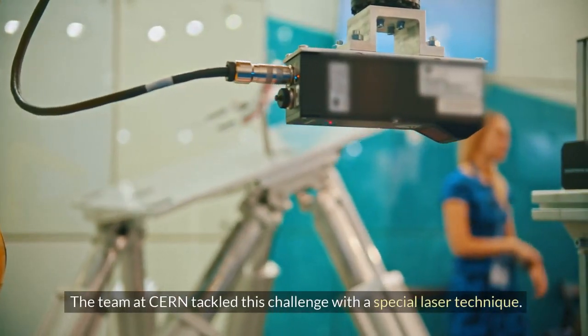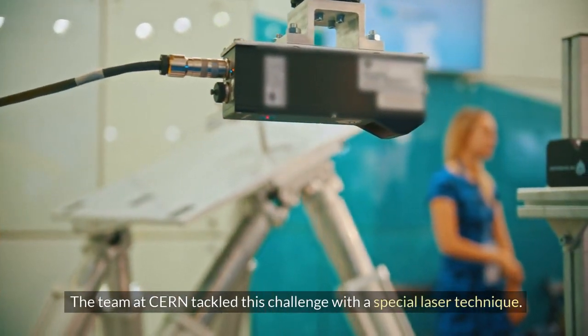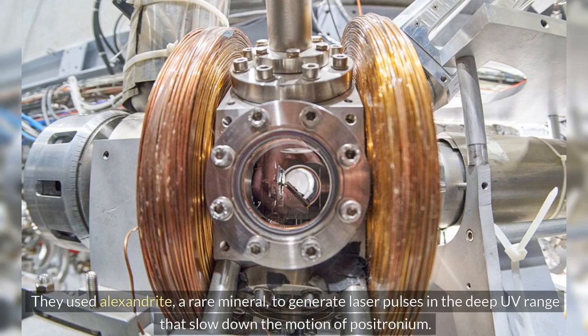The team at CERN tackled this challenge with a special laser technique. They used alexandrite, a rare mineral, to generate laser pulses in the deep UV range that slow down the motion of positronium.